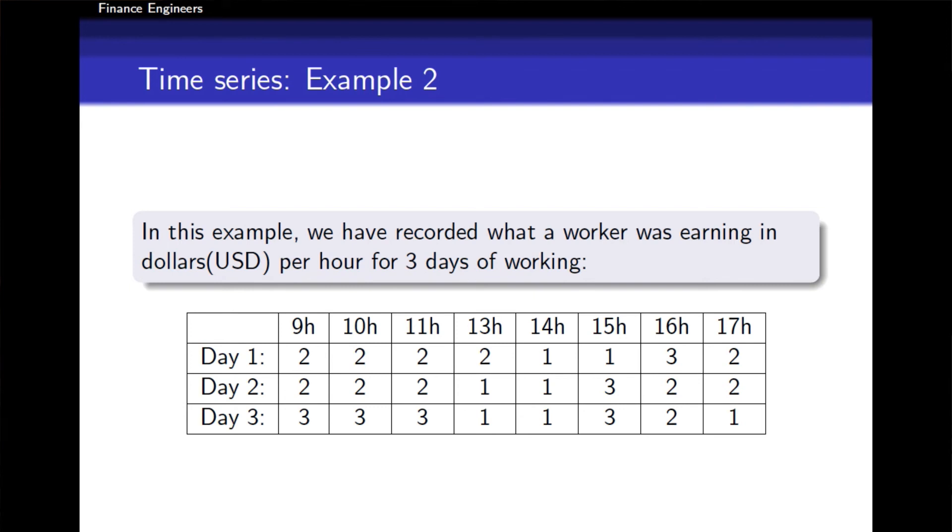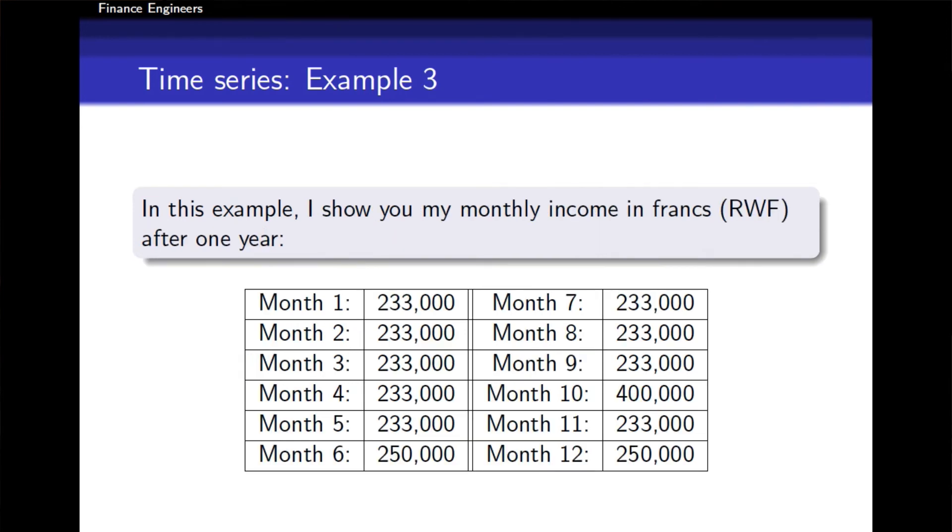In the third example, we have my monthly income after one year of working. I have written in Rwandan francs how much money I was earning per month. In the first month it was 233,000 francs, until December where I managed to make 250,000 francs.